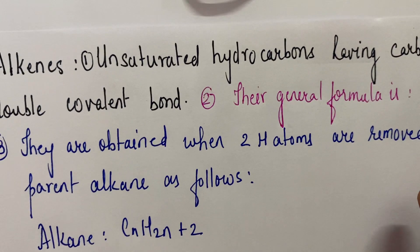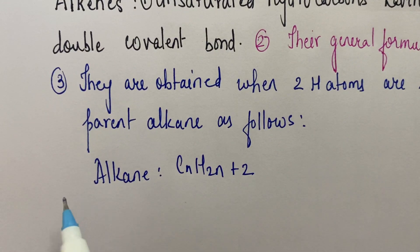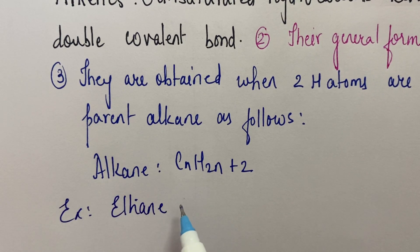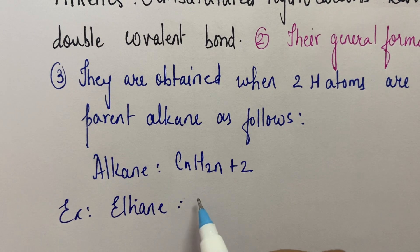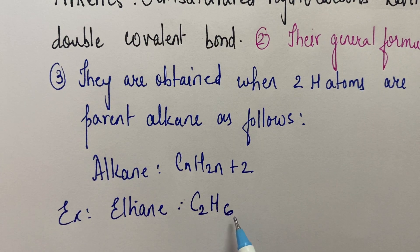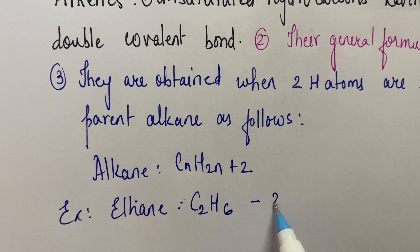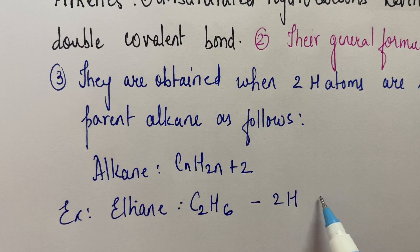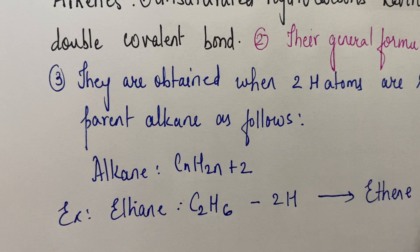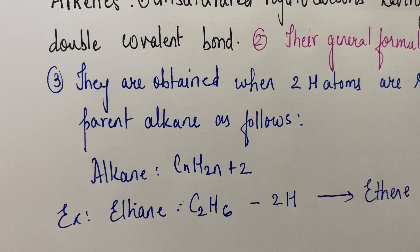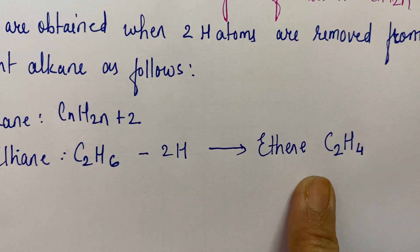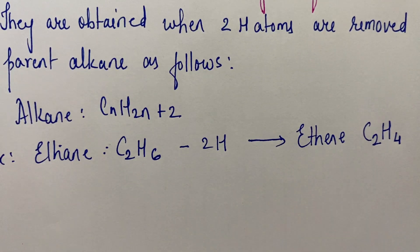For example, take ethane. Ethane's molecular formula is C2H6. If you minus 2 hydrogen, you will get ethene having molecular formula C2H4. So from parent ethane, if you remove 2 hydrogen, you get ethene C2H4.